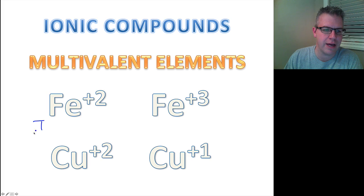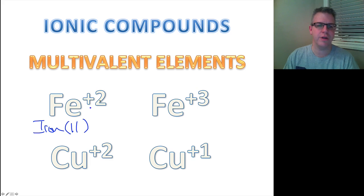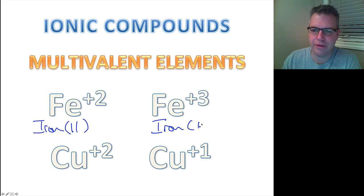So we know that this is iron. And I'm going to now attach a Roman numeral to that. This is iron(II) because it has a positive charge of 2. And you guessed that this one here is iron(III).